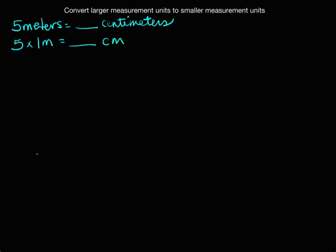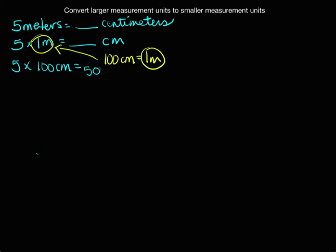I always want to start with, well, what do I know? I know that there are 100 centimeters in every 1 meter. So here's my 1 meter and I have 1 meter here. I can use some substitution and I can substitute 100 centimeters into my 1 meter. So 5 now times 100 centimeters and 5 times 100 is 500 and I get 500 centimeters.